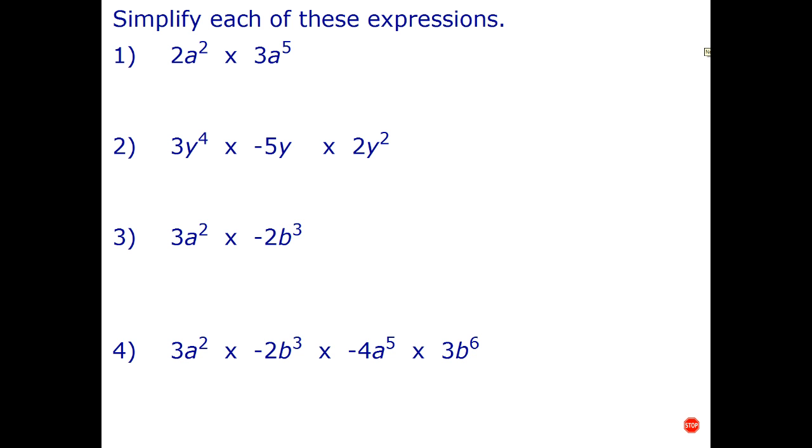Let's have a look at two a squared times three a to the fifth. Now the secret with these is that can really be thought of as two times a squared times three times a to the fifth. Now when we multiply, we can multiply in any order—that's called the commutative law. So I'm going to first multiply the two times the three. So multiplying the coefficients you just multiply normally, so two times three. Now a squared times a to the fifth, the index law says that's a to the two plus five. So to multiply powers with the same base add indices and the final answer is six times a to the fifth.